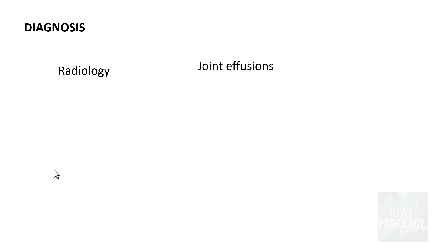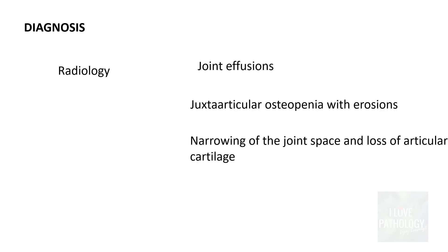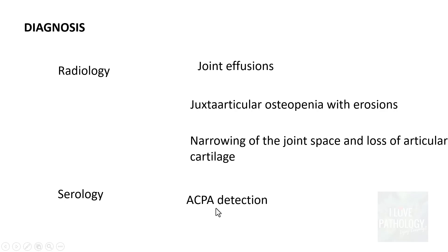For diagnosis, on physical examination you can find joint effusions in early stages. There can be juxtaarticular osteopenia with erosions, particularly when the pannus invades the bony tissue. Over time, there will be narrowing of the joint space and loss of articular cartilage — the beginning of fibrous ankylosis — and finally it can fuse forming bony ankylosis. Serologically, you have to demonstrate ACPA, anti-citrullinated protein antibodies, which are specific for rheumatoid arthritis.